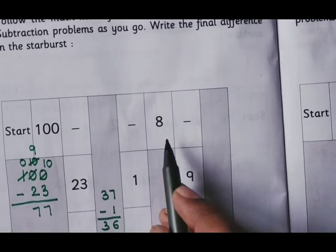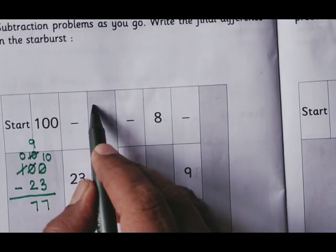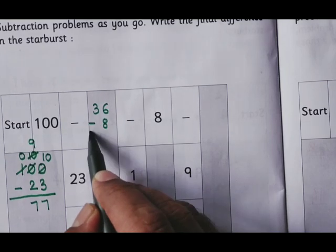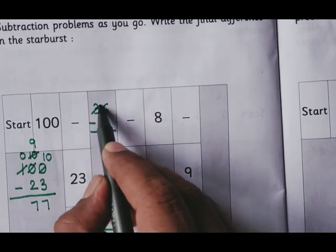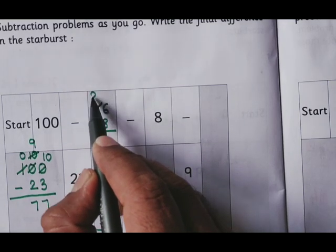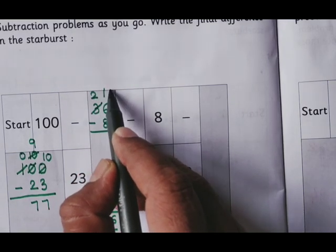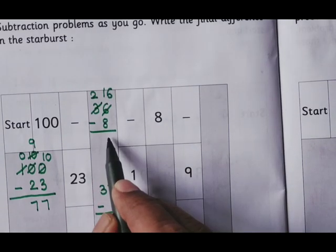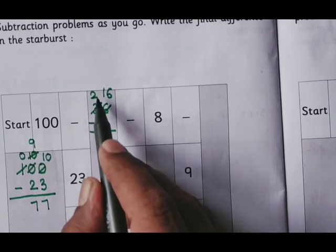Now 36 minus 8 we have to do. 36 minus 8. 6 minus 8 we can't do, so we have to borrow from the tenths. Here 2 tenths will be there. Here 10 units plus 6 units is 16 units. 16 minus 8 is 8. And here 28.